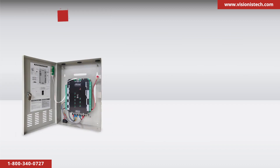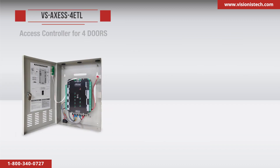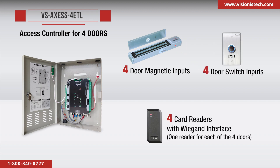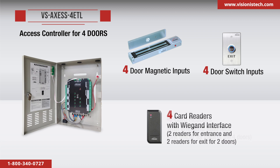The VS Access 4 ETL version 2 is an access controller for four doors. This system can connect up to four door magnetic inputs, four door switch inputs, and four card readers with Wiegand interface — one reader for each of the four doors, or two readers for entrance and two readers for exit for two doors.